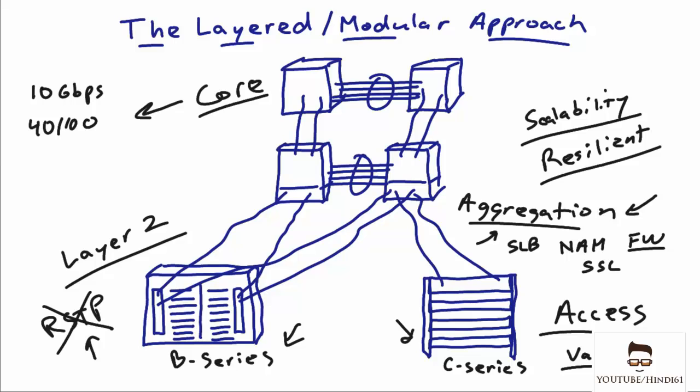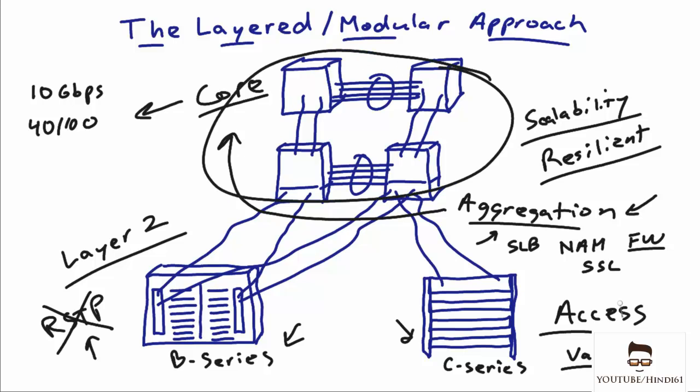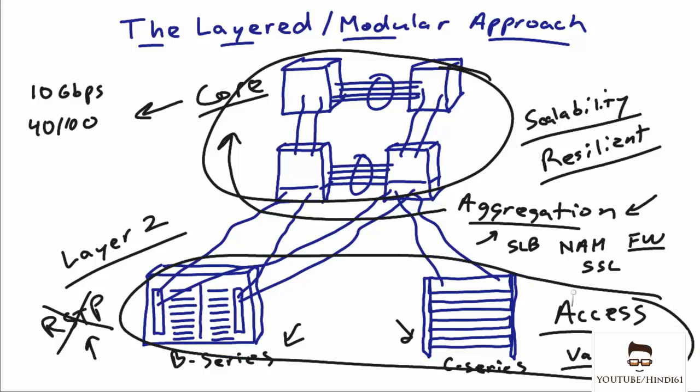While these layers are awesome and each has its own functions, many organizations today — both in their LAN and SAN designs — are doing what we call a collapsed core. This means the aggregation layer is moved up into the core. When you hear collapsed core, we are talking about a design that has core layer devices and access layer devices, so we really just define a core and an access.